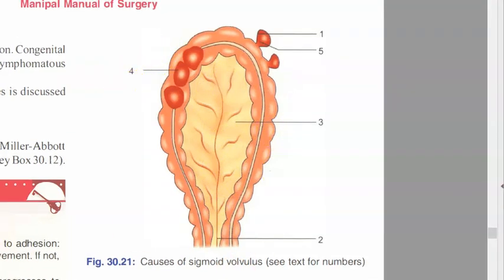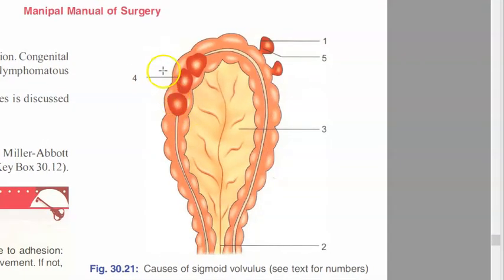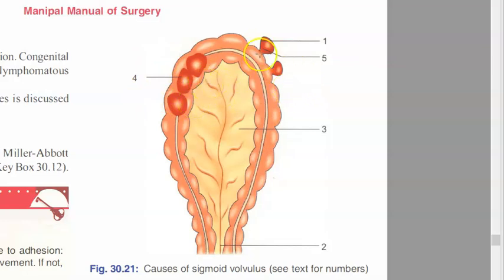Number three is long redundant pendulous sigmoid. Number four is a loaded colon due to high residue diet - if a lot of fecal matter is present in the colon due to high residue diet, that is a loaded colon. Number five is diverticulosis with a band or adhesion.